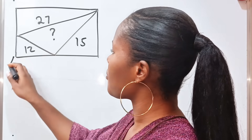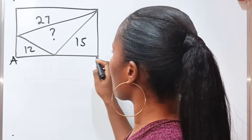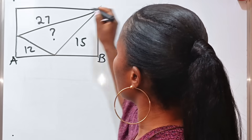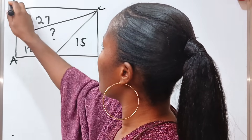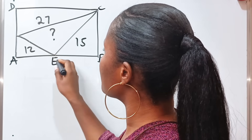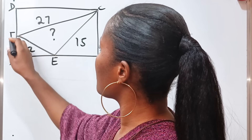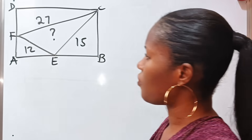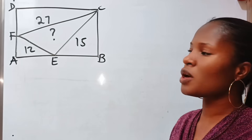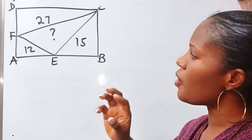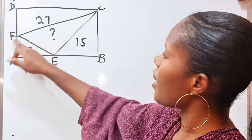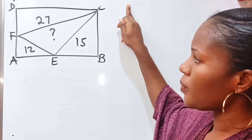Let us name the vertices A, B, C, and D. Let's call these points E and F. So the question says we should find the area of triangle EFC.